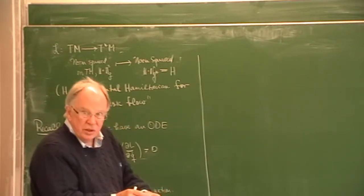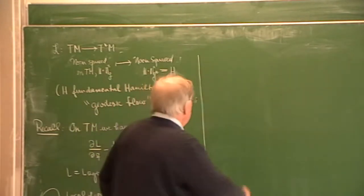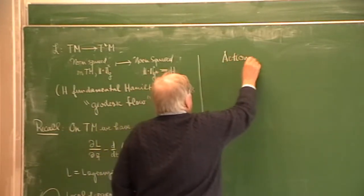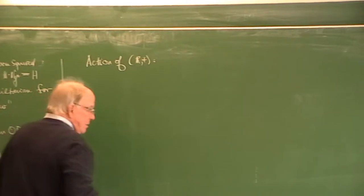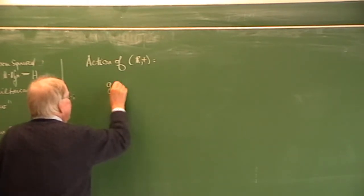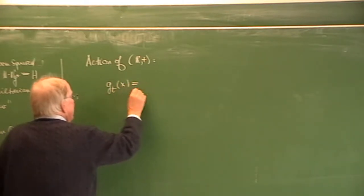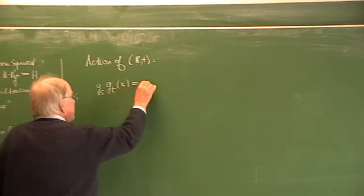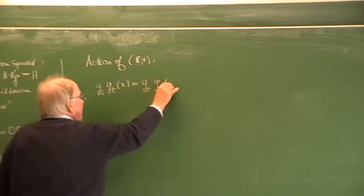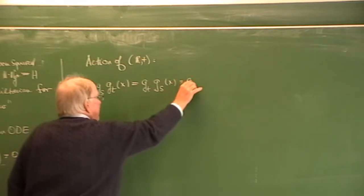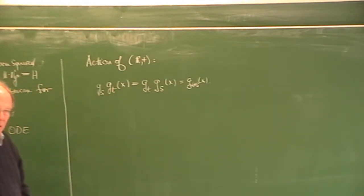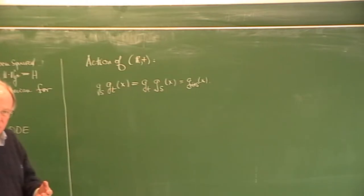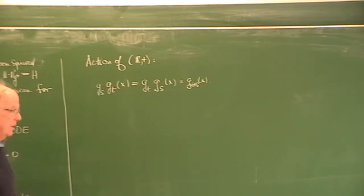Anybody understands what it means: a group action of the additive group R. So G_T of X composed with G_S of X is the same as G_{S+T} of X. It is an action of the group R. This is not an action of the group R, because it's only local—you cannot integrate it all the way.